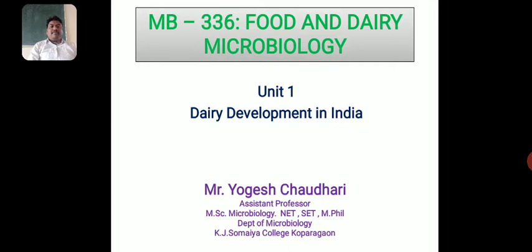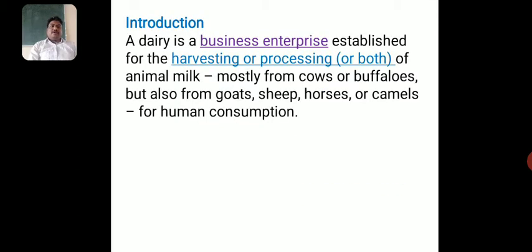Let us start with the first unit — dairy development in India — with a definition. A dairy is a business enterprise mainly established for harvesting or processing, or sometimes both, of animal milk. It is mostly done from cows or buffaloes, but also from other animals like goats, sheep, horses, or camels, and it is totally for human consumption.